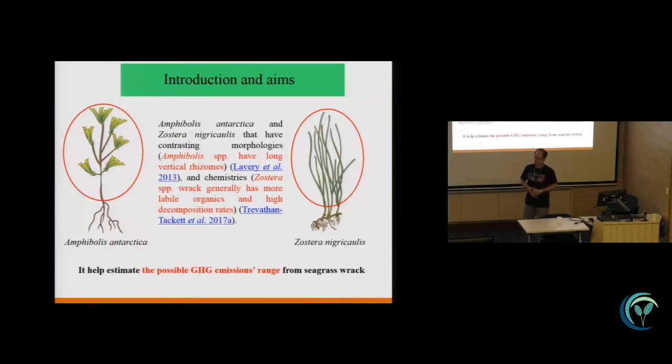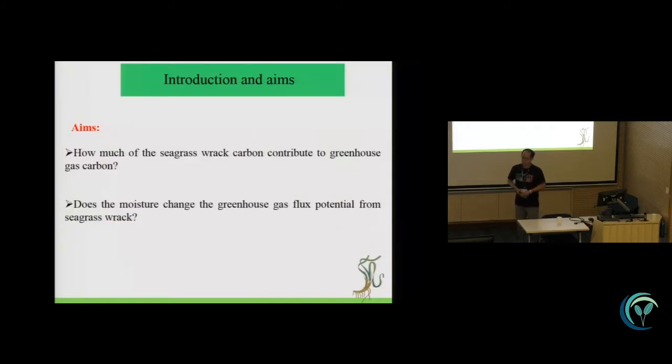And also the composition for Zostera nigricaulis has more bioorganic carbons and also higher composition lability. So if we chose these two seagrass species, this will help us to estimate the possible greenhouse gas emission rate from the seagrass wrack. So our aims are, how much of the seagrass wrack carbon contributes to greenhouse gas carbon? And also the second question is, does the moisture change the greenhouse gas influence potential from seagrass wrack?